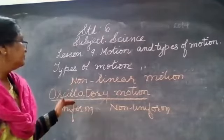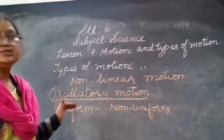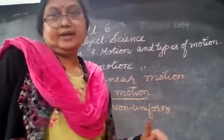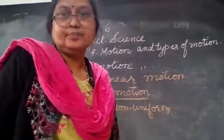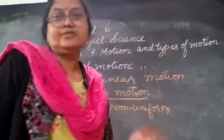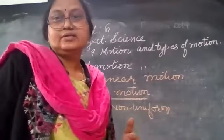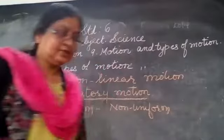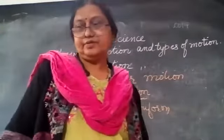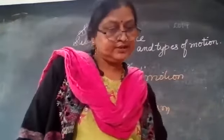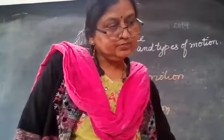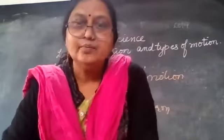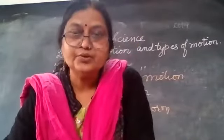Another type is circular motion. Circular motion can also be periodic — periodic means it will take a similar time each cycle. This is today's lesson. We will move further tomorrow and learn more about motion. Thank you.